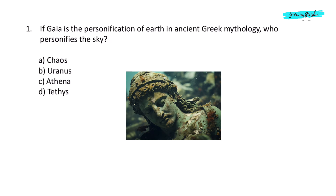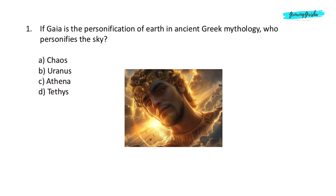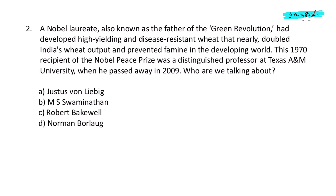Green Olympiad Sample Paper, Question 1. If Gaia is the personification of Earth in ancient Greek mythology, who personifies the sky? Option B: Uranus.